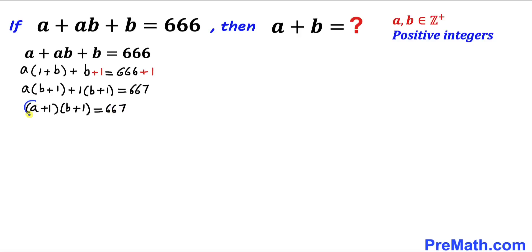The possible factors are going to be 1 times 667 and the second possibility is 667 times 1.